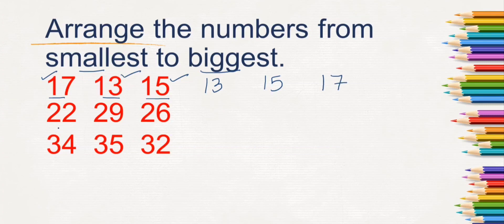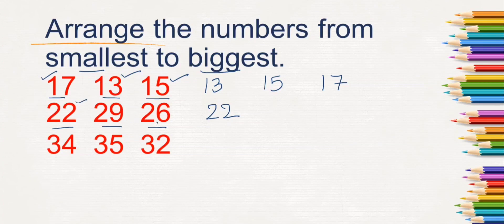Next, what are the numbers here? 22, 29, and 26. Which is the smallest number? 22. So write 22. Next smallest number — when you compare 29 and 26, the smaller number is 26. And 29 is the biggest number among the given numbers, so write 29.